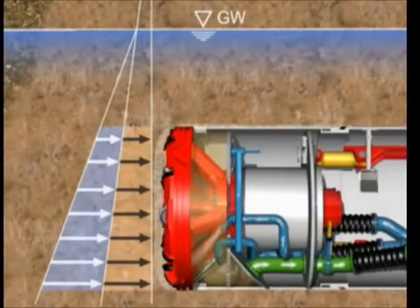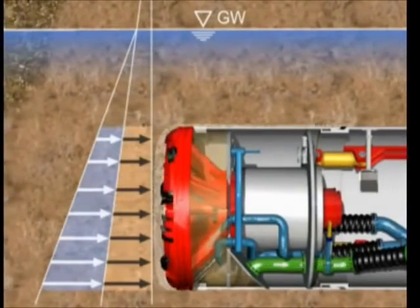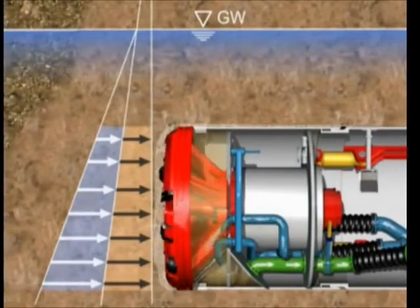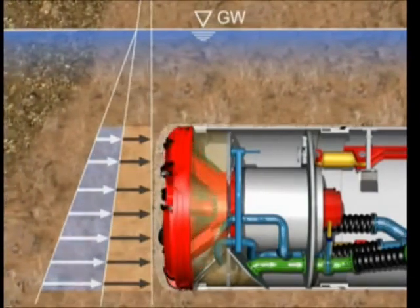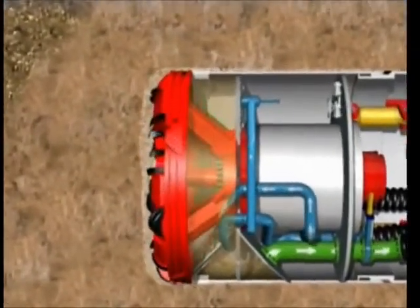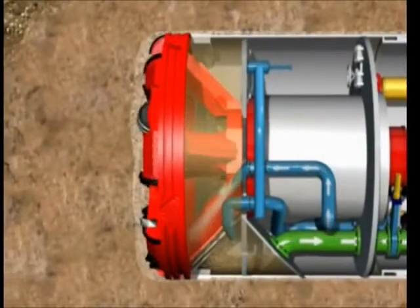In order to ensure that the tunneling is safe and controlled, the forces exerted and the working phase have to be kept balanced. The earth pressure shown in brown and the water pressure shown in blue are counterbalanced by the machine with the pressure of the bentonite suspension in the excavation chamber.